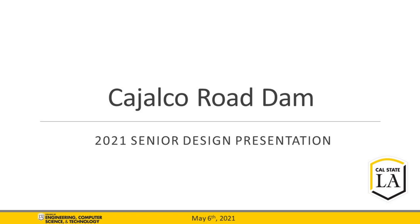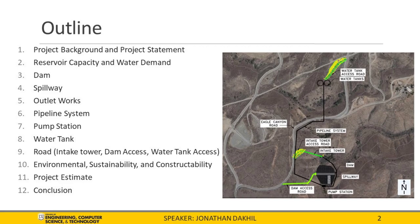In our presentation, we will first review our project background and problem statement. Following this, we will analyze our reservoir capacity based on client demand and recommend a site location. We will then proceed into the design aspects of the project, starting with the dam, then the spillway design, followed by the outlet works. Hydraulic design aspects will be presented, including the pipeline system, pump station, and water tanks. We will then analyze the road design. Environmental, sustainability, and constructability aspects will be discussed. Finally, our project estimate will be presented, followed by a conclusion.